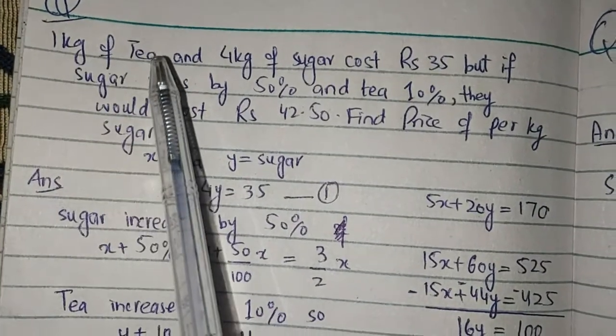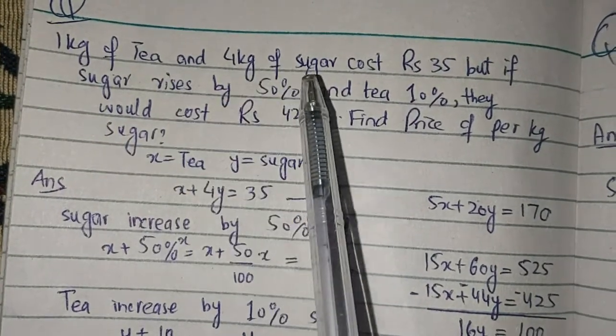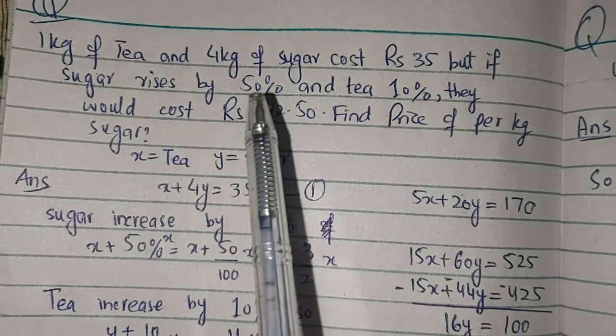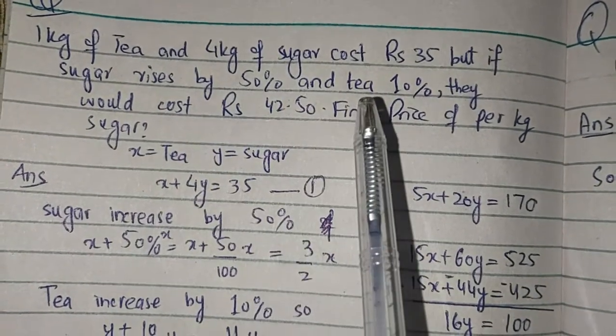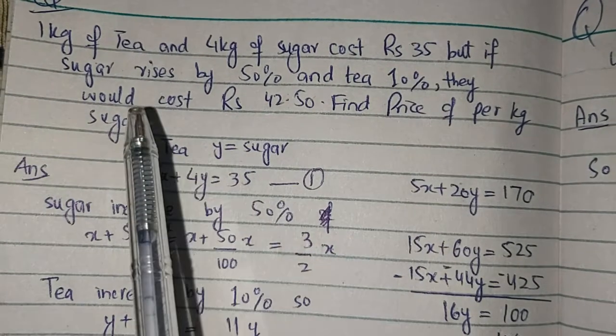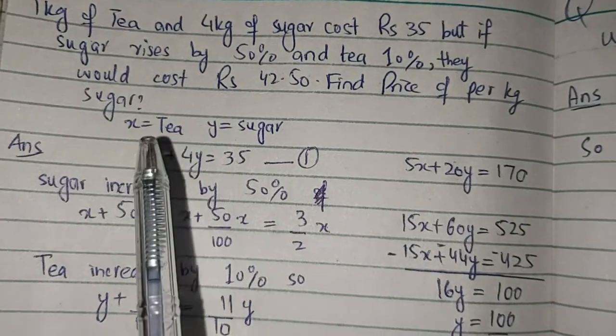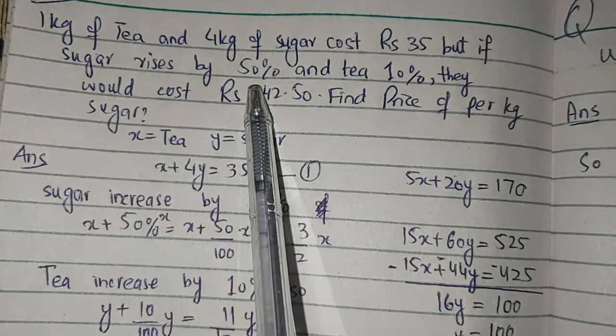1 kg of tea and 4 kg of sugar cost rupees 35, but if sugar rises by 50% and tea by 10%, they would cost rupees 42.50. Find price per kg of sugar. Let x equal tea, y equal sugar.